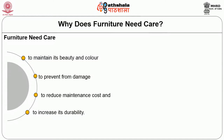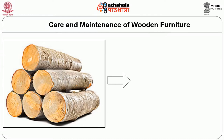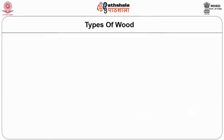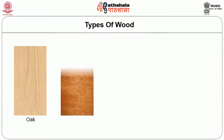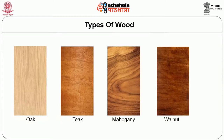First we will talk about the care and maintenance of wooden furniture. Wood is the traditional and oldest material for furniture making. Today there is a wide choice of wood, for example oak, teak, mahogany, walnut, etc. It requires care and maintenance to retain its beauty, uniqueness and character.